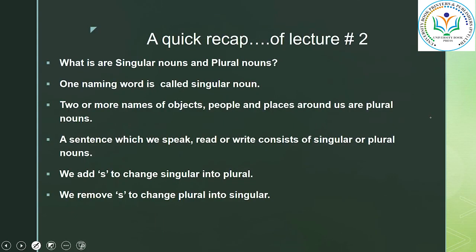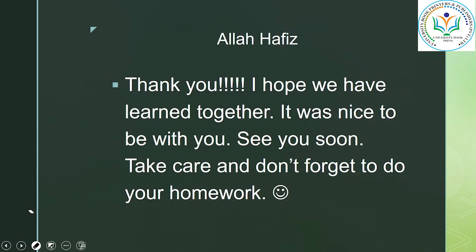Let's have a quick recap of lecture number 2. Today's topic was singular and plural. One naming word is called a singular noun. Two or more names of objects, people, and places around us are plural nouns. We add an S to change singular into plural, and we remove the S to change plural into singular. For example: toy becomes toys when we add S, and toys becomes toy when we remove the S. Thank you. I hope we have learned together. See you soon. Take care and don't forget to do your homework. Have a good day. Allah Hafiz.